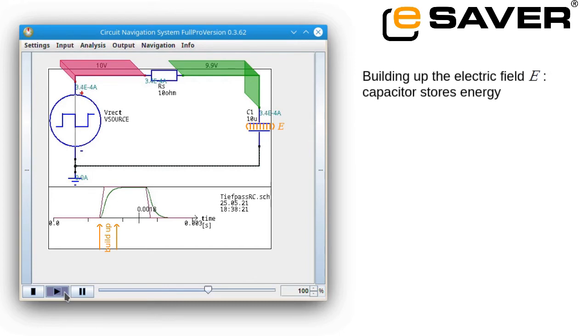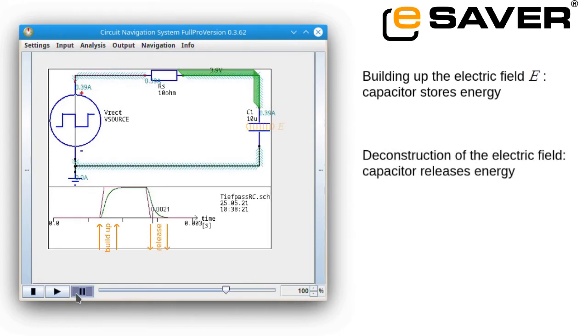And then release it again. When the energy is released again, the field dissolves. We can see that quite well at this point of time. Even though the voltage source no longer supplies any voltage at this moment, a current is still flowing. This is because the voltage needed for this now comes from the capacitor.